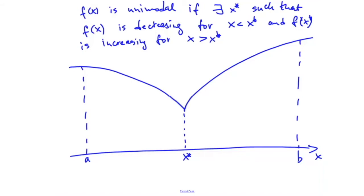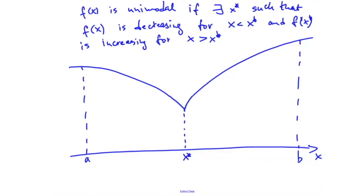Let's see if something like the bisection method will work. If I take the midpoint of the interval, I obtain the value f(c) where c is the midpoint. Is there a way to figure out which subinterval the minimizer belongs to, given just the value of f(c)? Probably not.